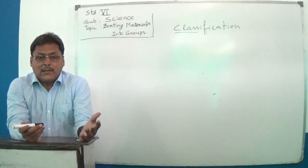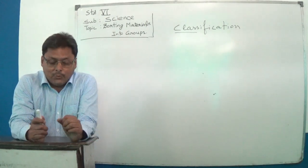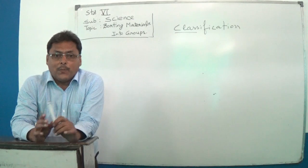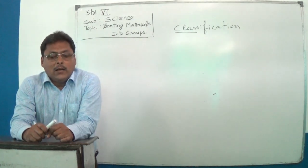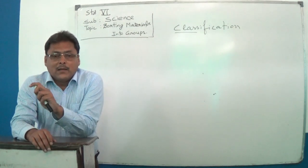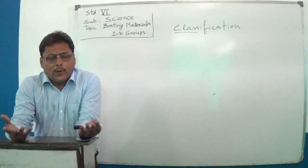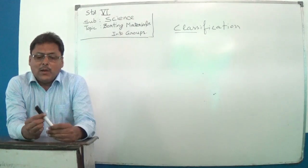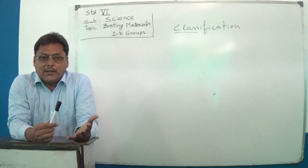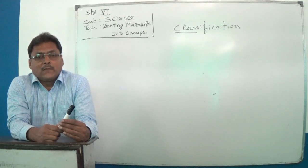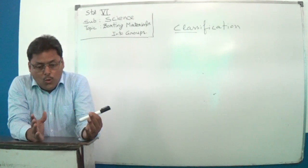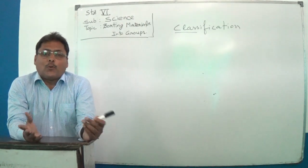Now, in the beginning, we classify according to the origin — that is, classification according to the source of the material, from where we got it. This desk is made up of wood, and wood we get from the trees, from nature. But this one is made up of plastic. Plastic you cannot find in nature; it does not grow in nature. So we have two basic sources of all materials.